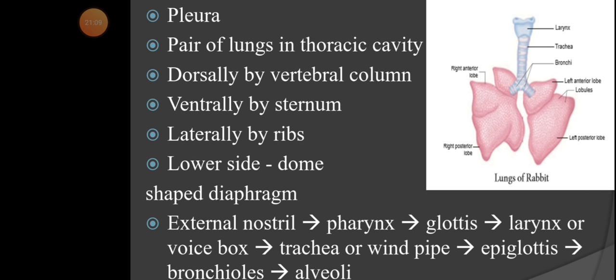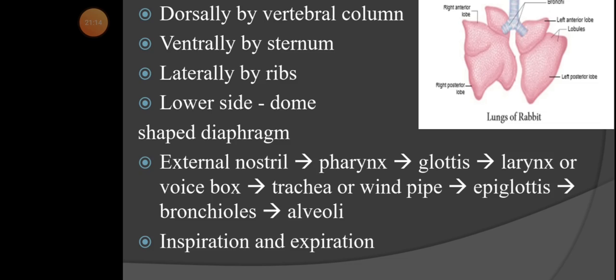At the lower side, a dome-shaped diaphragm is present, which helps the lungs perform the mechanism of respiration. Air first enters the nostrils, goes to the pharynx, then to the glottis, then the larynx (voice box), where air vibrates to produce sound. Then it reaches the trachea (windpipe). The epiglottis is a lid-like opening that prevents food content from going into the windpipe.